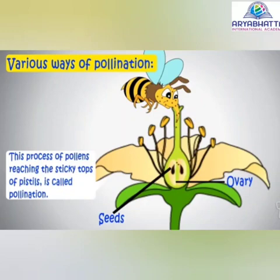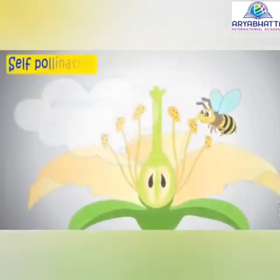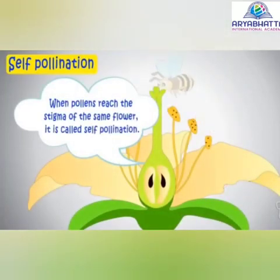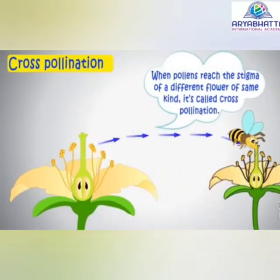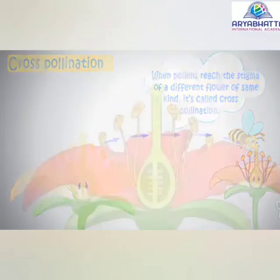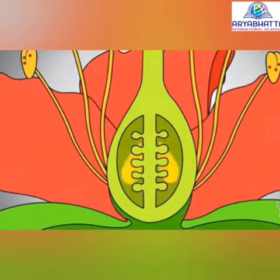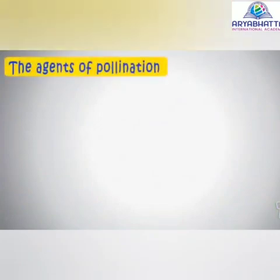This process of pollens reaching the sticky tops of pistils is called pollination. Pollens may reach the stigma of the same flower or the stigma of different flowers. When pollens reach the stigma of the same flower, it is called self-pollination, and when they reach a different flower, it is called cross-pollination.